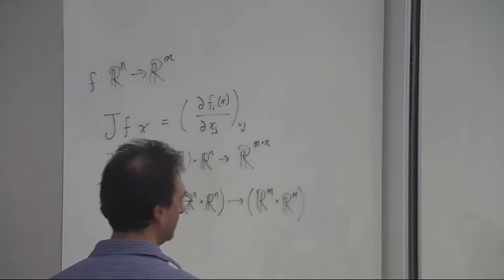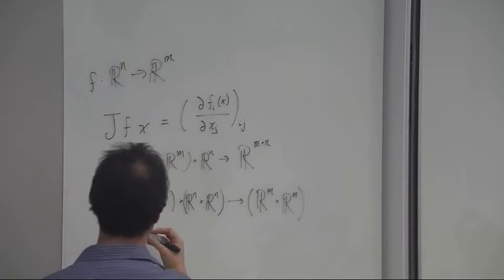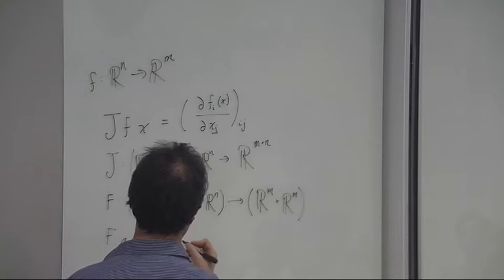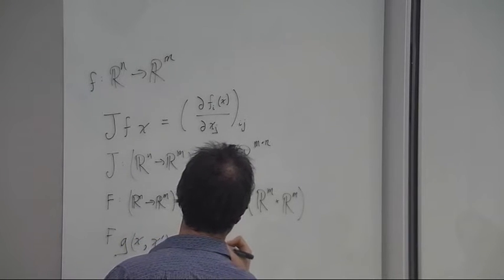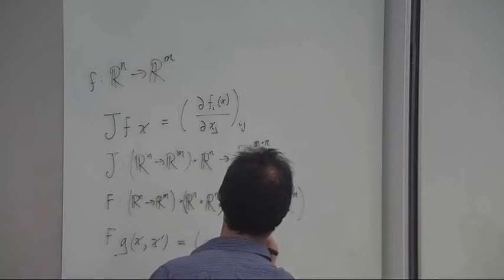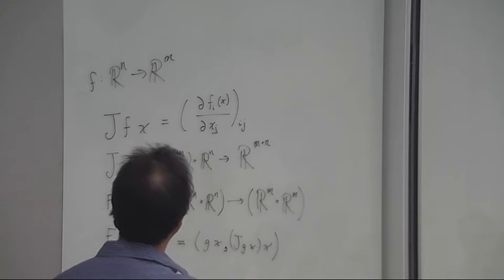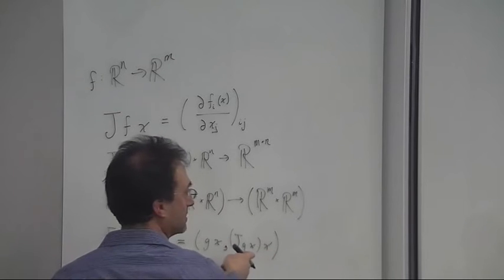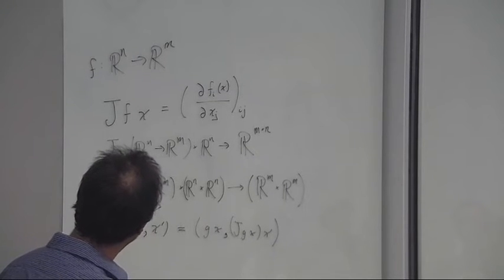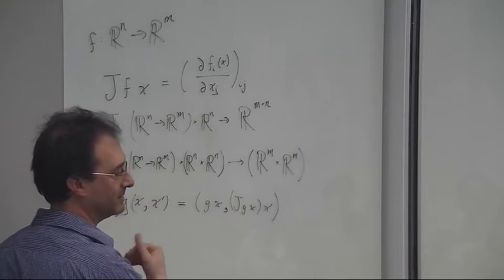What is this operator supposed to do? We take F and apply it to a function G at a point X with X-prime, and it gives us G(X) paired with the Jacobian-vector product J(G)(X) · X′. The way this works internally should do so without constructing the full matrix. There are favorable complexity properties that come from doing it this way — it says not only do I want to evaluate G at X to get G(X), but I also want to multiply the Jacobian at that point by some vector.